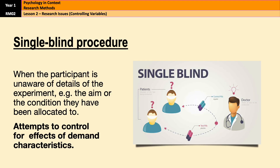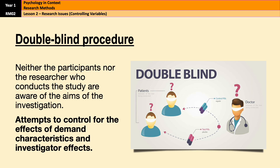Finally, the last two ways of dealing with unwanted variables are single and double blinds. A single blind procedure is when the participant is unaware of the details of the experiment — for example, the aim or the condition they've been allocated to. This controls for demand characteristics, because the less participants know, the less likely they are to work out what the study is about and change their behaviour to match expectations. A double blind procedure takes that further: neither the participant nor the researcher who conducts the study are aware of the aims of the investigation, so both demand characteristics and investigator effects can be controlled or minimised.